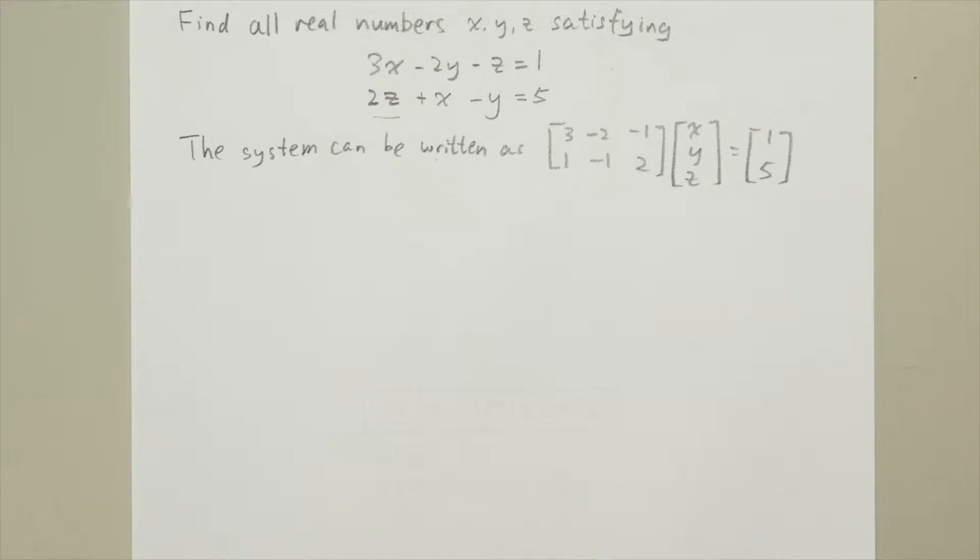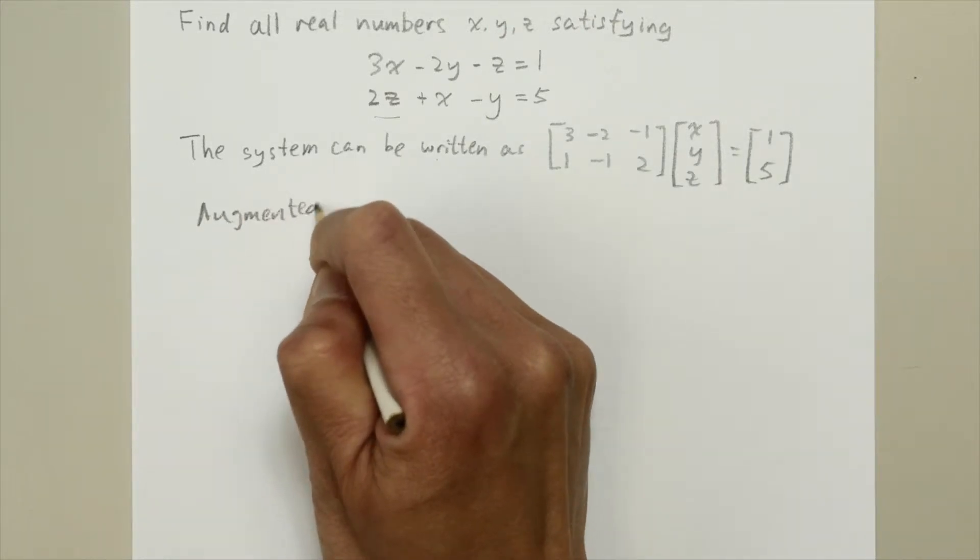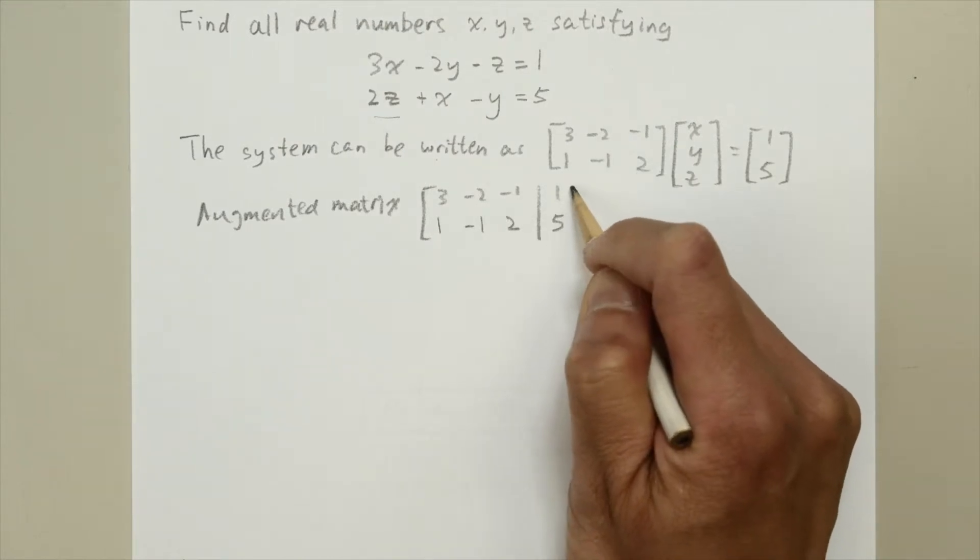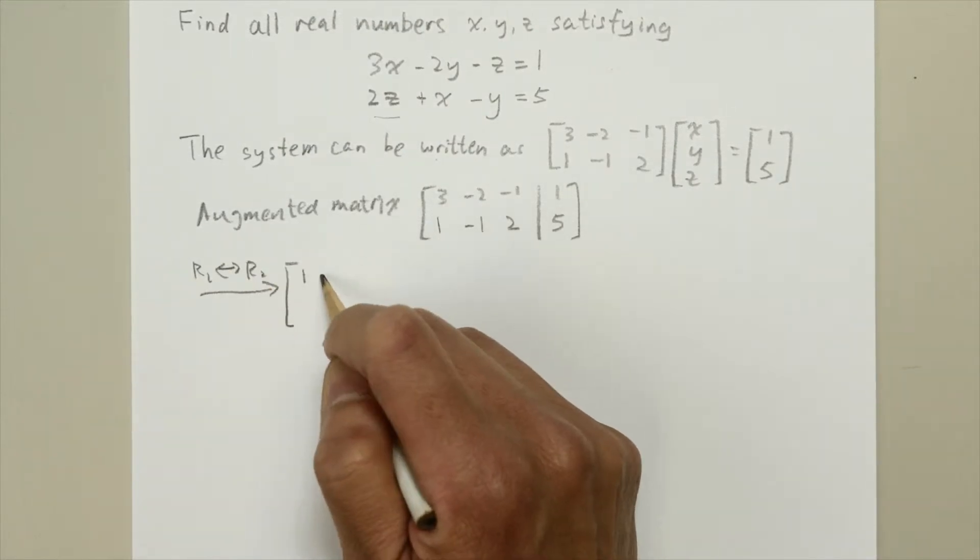We are going to solve this system by row reducing the augmented matrix. And here are the calculations.